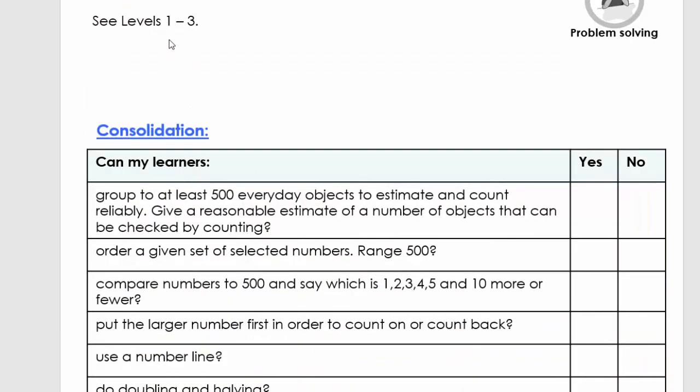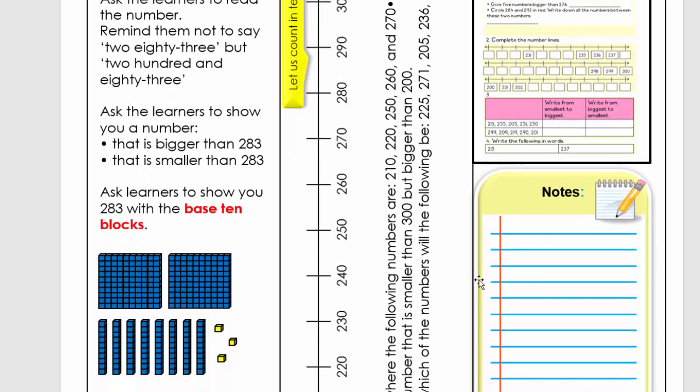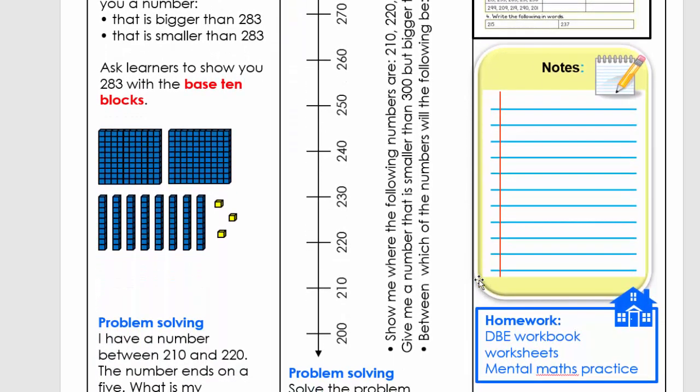The problem solving then is levels one, two, three. If you can go to levels one, two, three again, and we're going to scroll down, there's a problem. The first problem here is where they can use resources like the base 10 blocks to solve it, and then they can solve it on a number line, or they can just solve it by writing a number sentence and give you the answer.